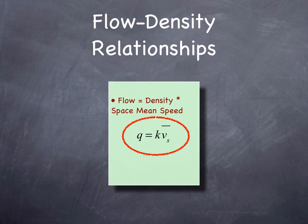The key relationship is q equals k times v. This is definitional. The flow equals the density times the space mean speed. If you think about the units, vehicles per hour equals vehicles per kilometer times kilometers per hour.